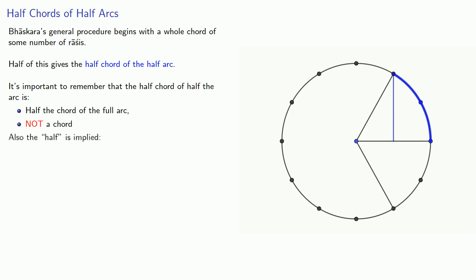Also typically, the half is implied. So while we could say the half-chord of half of four racis, we know that half of four is two. So we would just call this the half-chord of two racis.